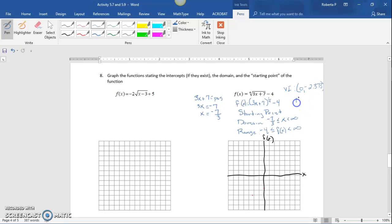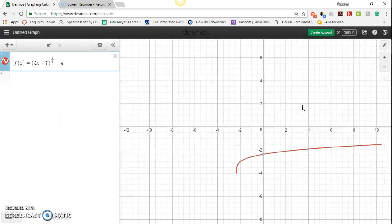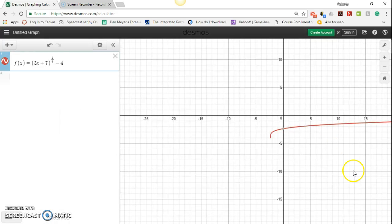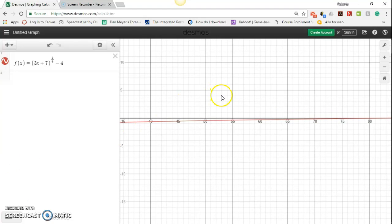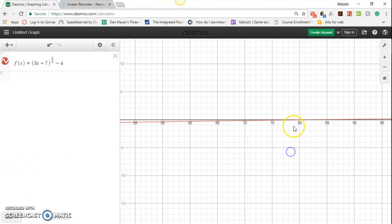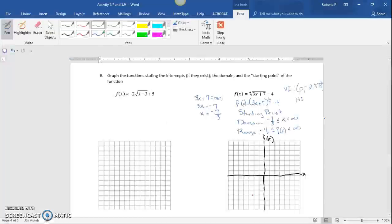For the horizontal intercept, we can use Desmos and zoom out to find where it intersects the x-axis, which is at approximately (83, 0).